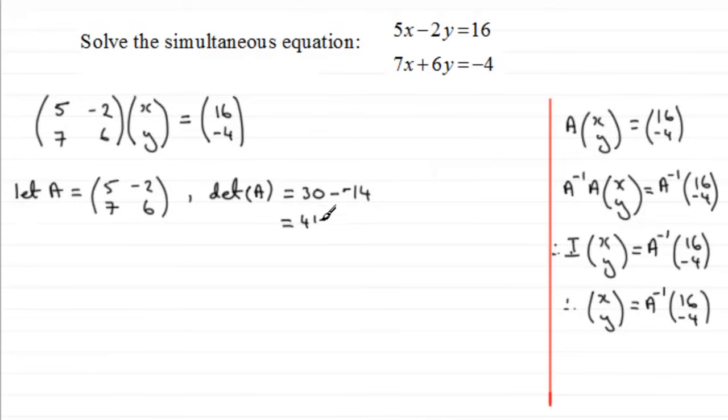So when it comes to working out what the inverse of A is, we can say therefore the inverse of A is equal to - and it was always equal to 1 divided by the determinant of A. So that's 1 over 44.